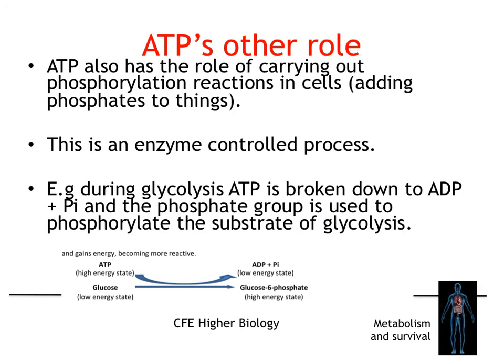There's another role that ATP has, and that is it's involved in something called a phosphorylation reaction — that just means adding phosphate groups to things. It's an enzyme-controlled process. For example, during glycolysis, ATP is broken down to ADP and inorganic phosphate, and the phosphate group is used to phosphorylate the substrate of glycolysis.